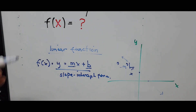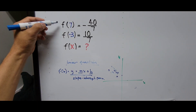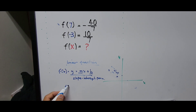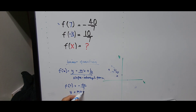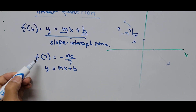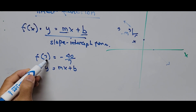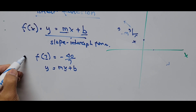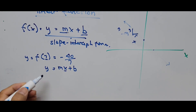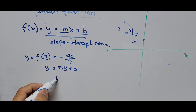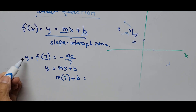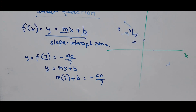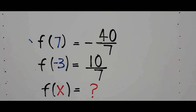Now we start solving the system of equations. From the first function, f(7) equals negative 40 over 7. Using the slope-intercept formula y = mx + b, we substitute x = 7 and y = negative 40 over 7. This gives us 7m + b = negative 40 over 7, which we call equation 1.